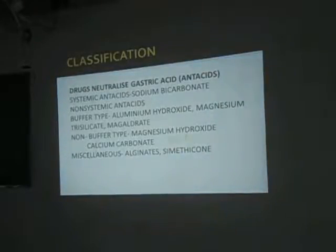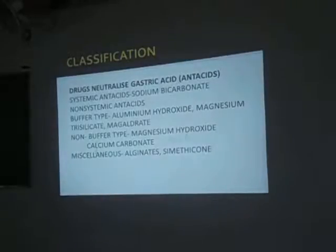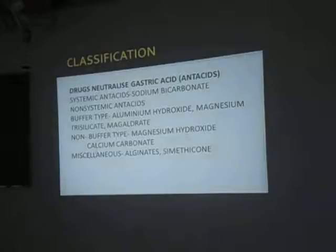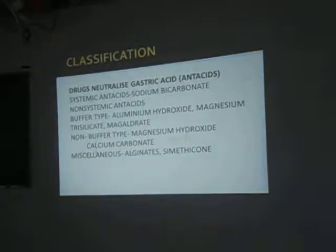Then we have buffer type and non-buffer type. We need to remember the drugs that can alter the acid-base balance within the body. The drugs which can alter this acid-base balance, we call them non-buffer type. But a drug which has the property of compensating for the loss it has caused in terms of acidic pH or basic pH, we call them buffer type.